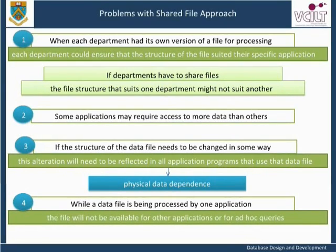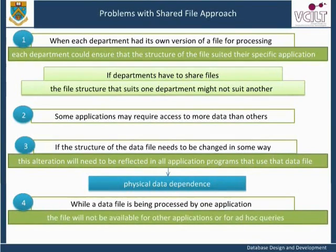This is because if more than one application is allowed to alter data in a file at one time, serious problems can arise in ensuring that the updates made by each application do not clash with one another. This issue of ensuring consistent, concurrent updating of information is an extremely important one and is dealt with in detail for database systems in the unit on concurrency control. Database systems avoid these problems by not allowing more than one application to access a file at one time.